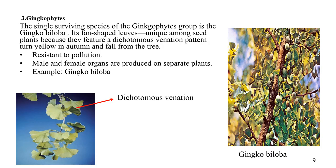The single surviving species of the phylum Ginkgophyta is Ginkgo biloba. Its fan-shaped leaves are unique among seed plants because they have a dichotomous venation pattern, which you can see in the picture. They are not evergreen; their leaves turn yellow in autumn and fall from the trees. Ginkgo biloba is planted in public spaces because it is unusually resistant to pollution. It is a dioecious plant, having male and female reproductive organs on separate plants.